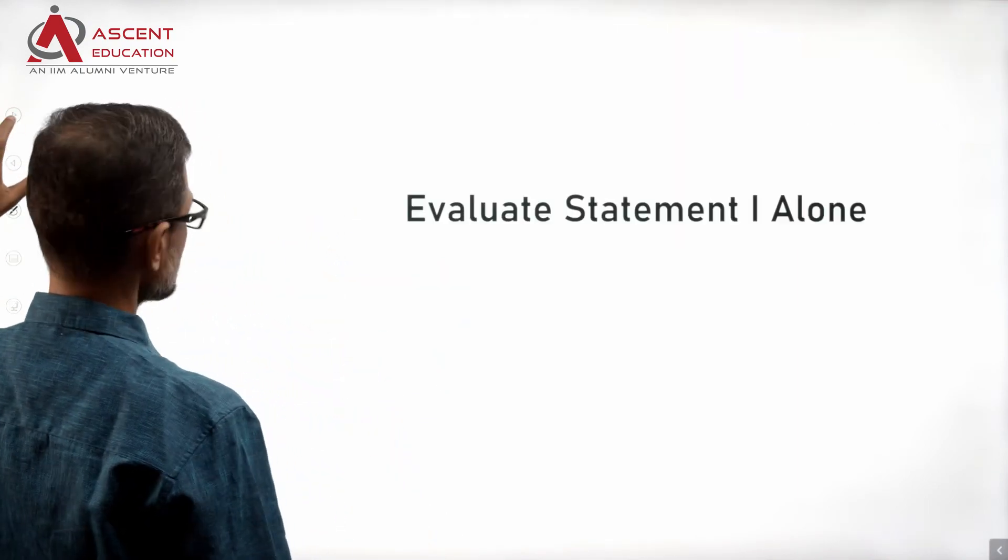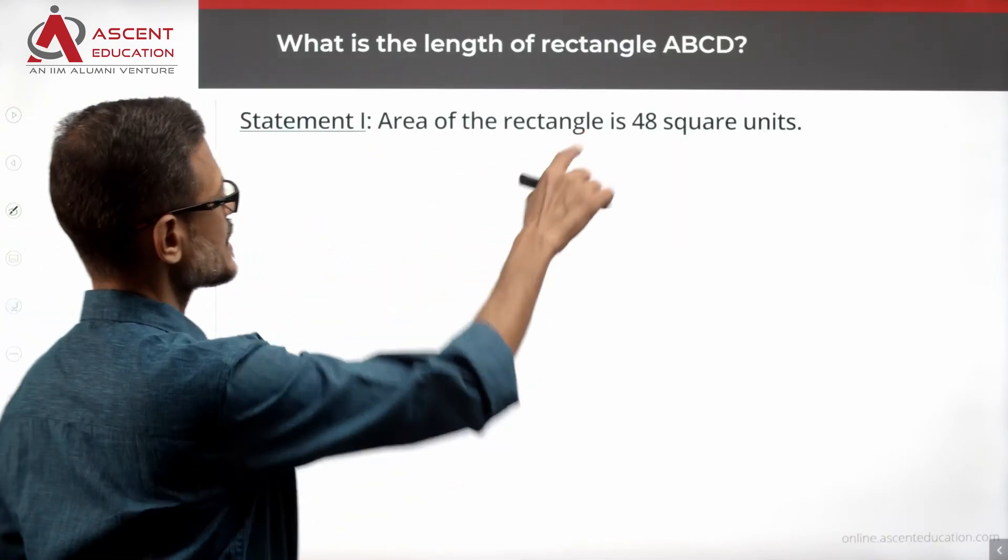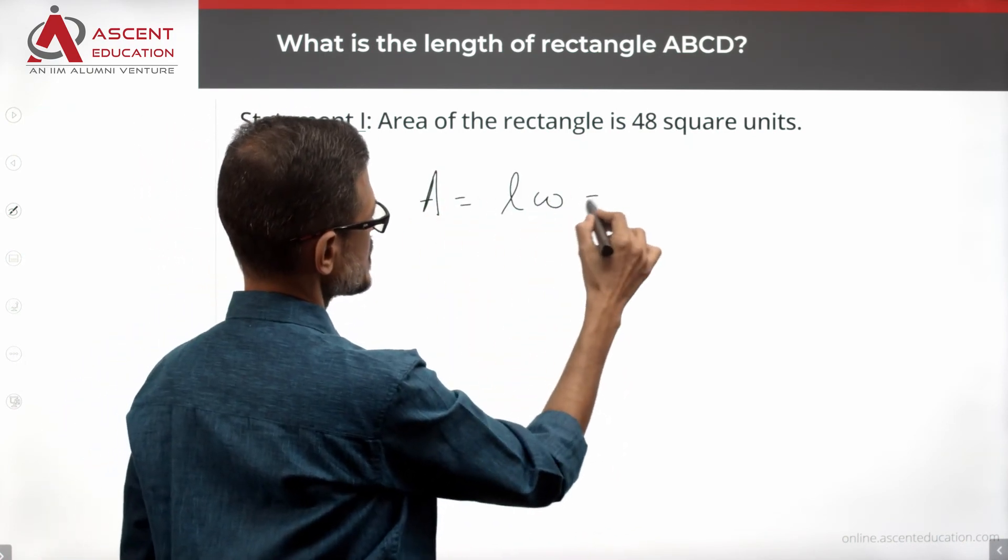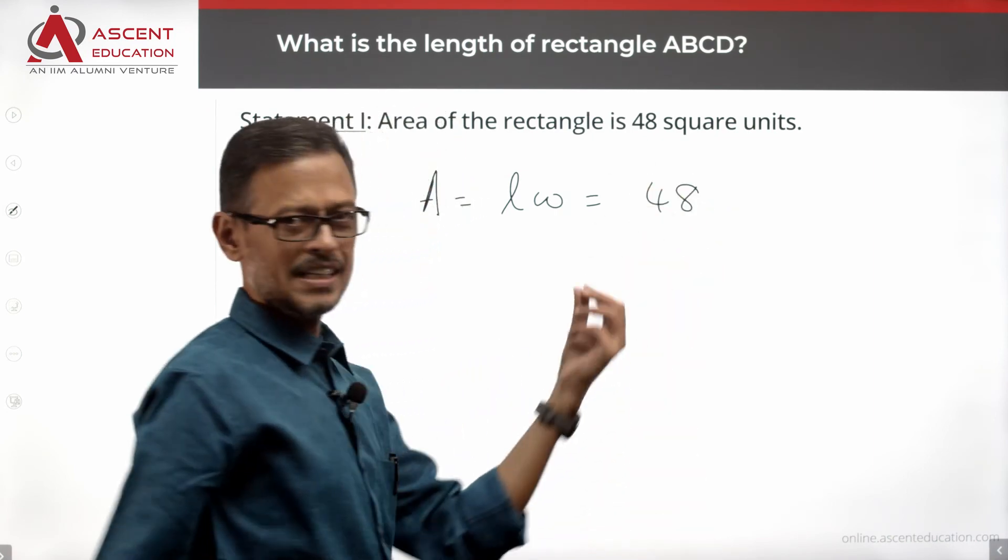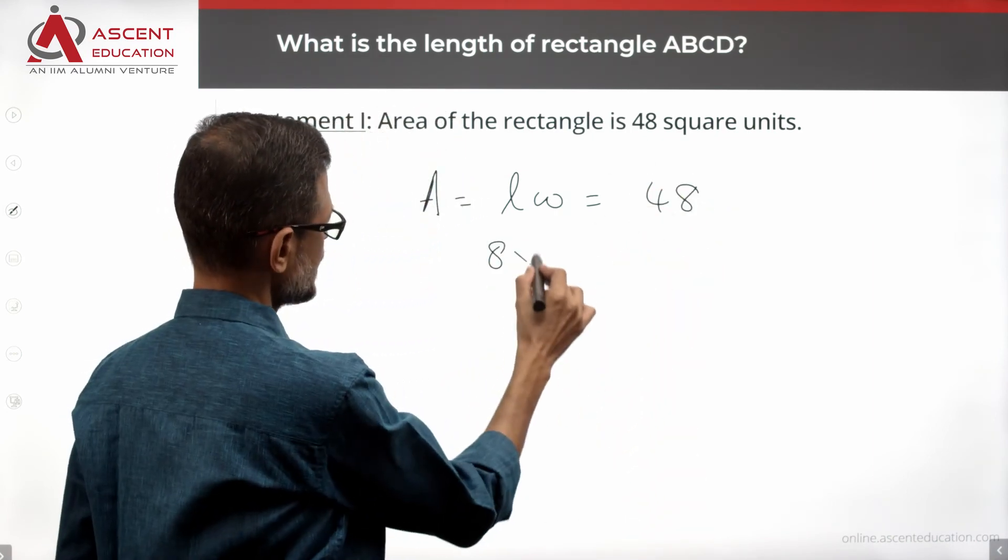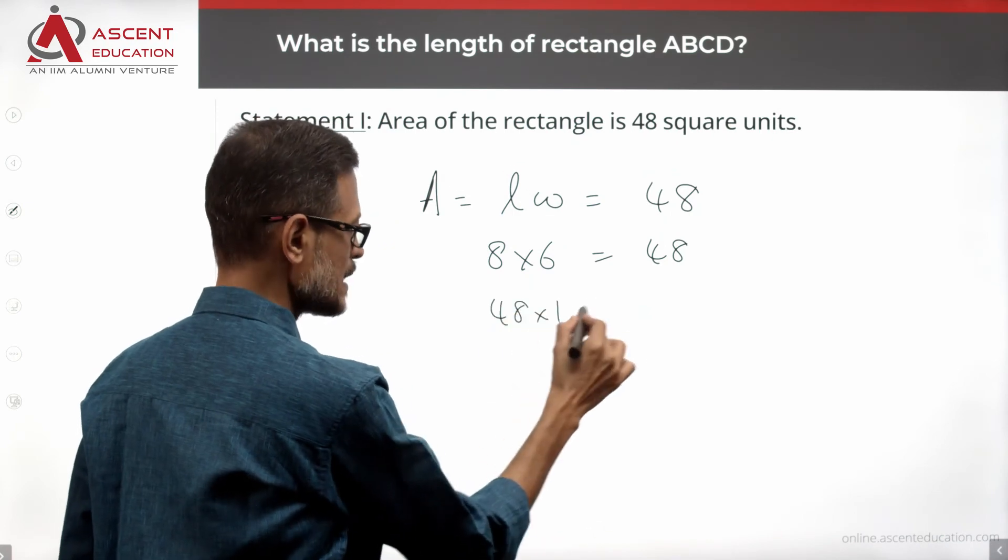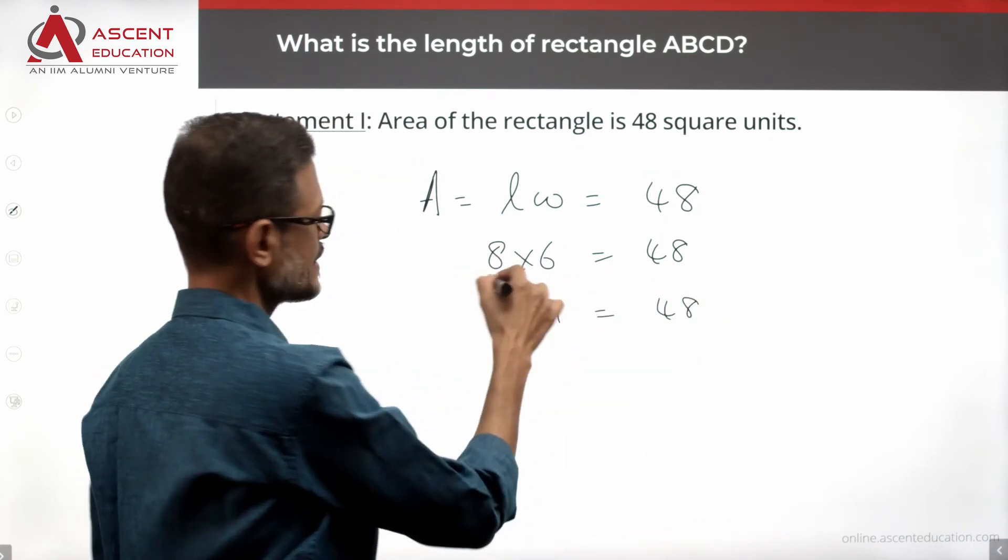Evaluate the statements. Start with statement 1 alone. Area of the rectangle is 48 square units. Rectangle area formula is length into width which is equal to 48. Multiple possibilities. It could be 8 into 6 which is equal to 48. It could be 48 into 1 which is equal to 48.